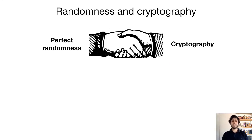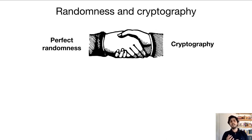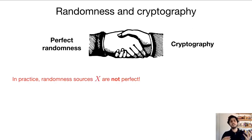There's a fundamental connection between randomness and cryptography and also many other aspects of computer science, and a lot of tasks fundamentally require randomness in order to be realized. Additionally, a lot of these tasks also require access to a stream of perfectly random or uniformly random bits. But this is not very realistic because, in practice, sources of randomness are not perfect.